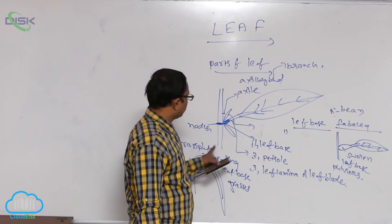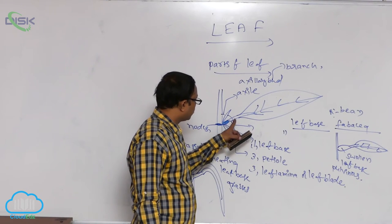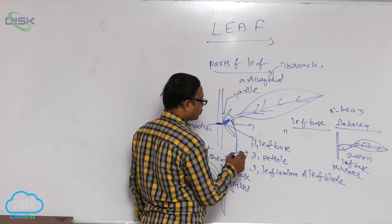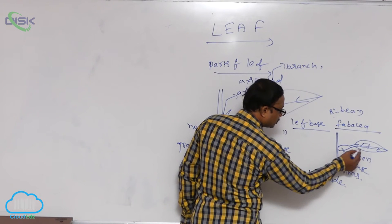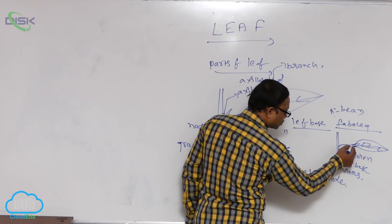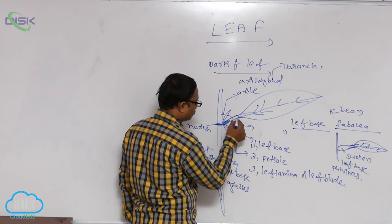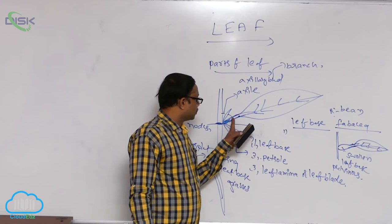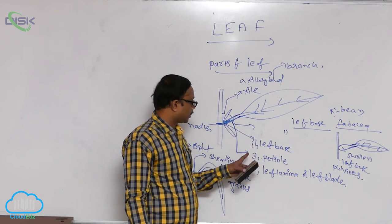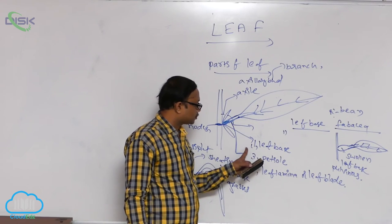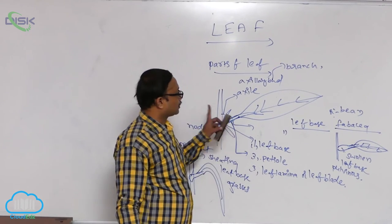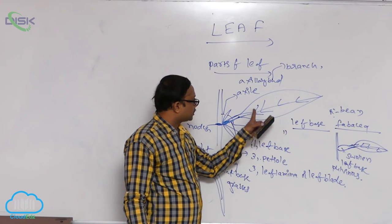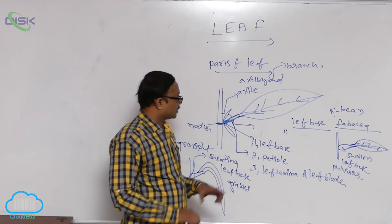The leaf is attached to the leaf base by a stalk-like structure, and this stalk-like structure is known as the petiole. The leaf base and the leaf lamina are both connected by this stalk-like structure. The petiole is a long, thin, slender, stalk-like structure.